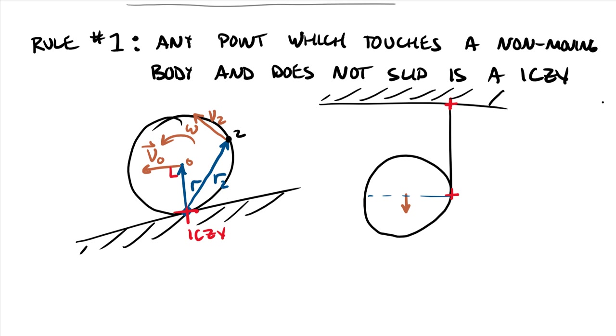So if I draw a line across the middle, it turns out I can use these two points of zero velocity. One of them, the ICZV, the other one here in the middle.